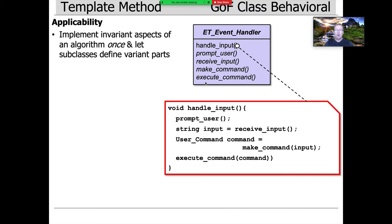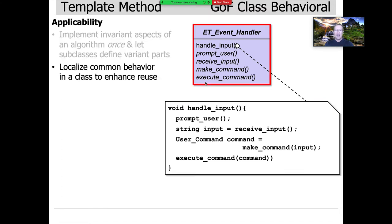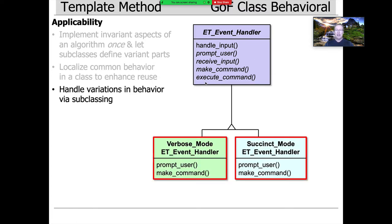You should apply this pattern if you want to do these invariant parts one time, and then allow control of variability through subclassing. We're going to localize common behavior in the abstract base class in order to enhance the reuse, and then any variability that needs to be done is handled by subclassing. So it's very structured, very stylized.